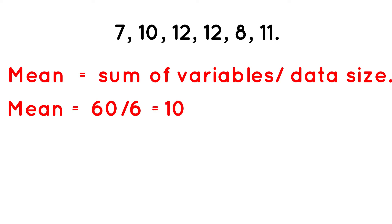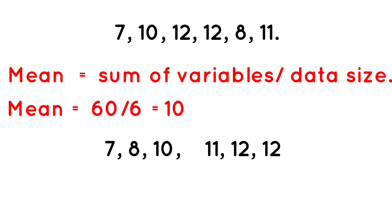If we arrange our dataset in ascending order and place the value of the mean into it, we have: 7, 8, 10, 11, 12. We can see that the mean, which is 10, can be placed between 10 and 11 — which we can see as the center or midpoint of the dataset. In statistics, the mean is usually used to represent the center value, which means it can actually replace the median. The mean can also serve as the center value in our dataset.